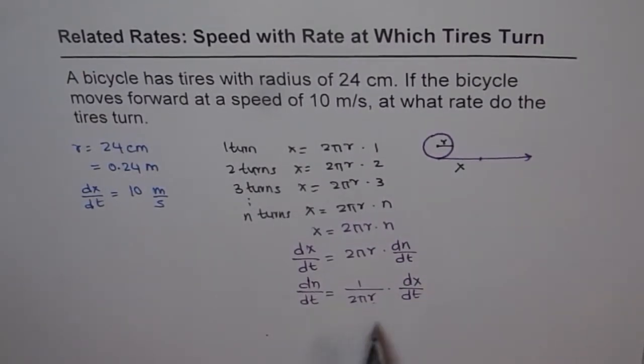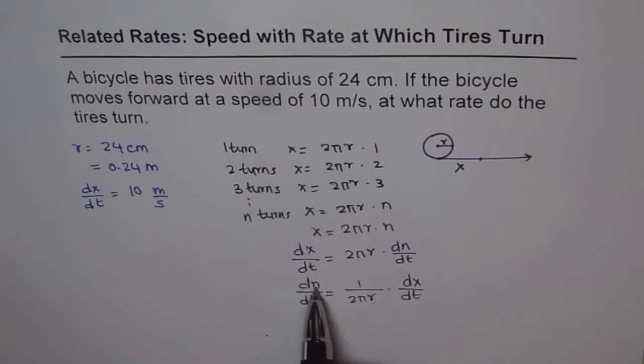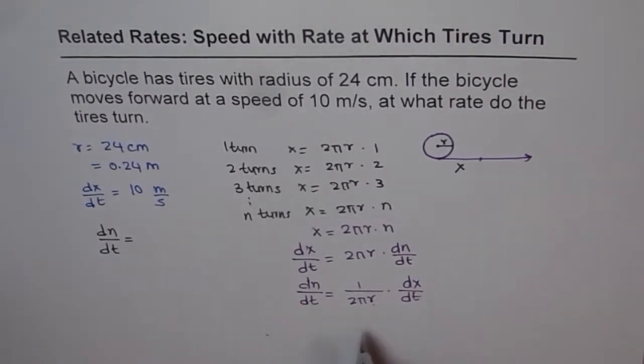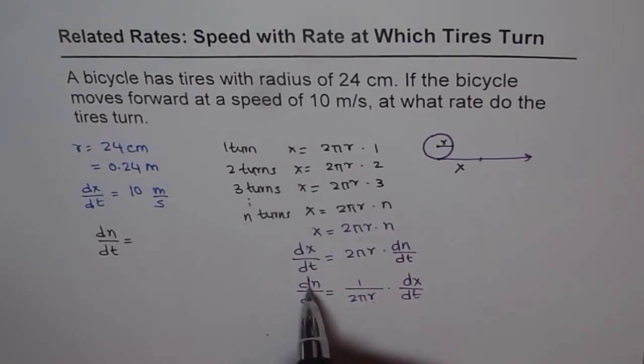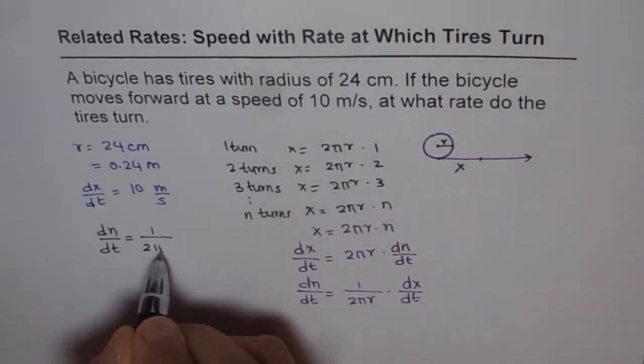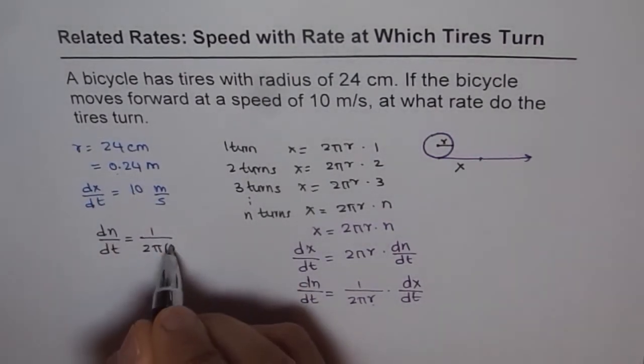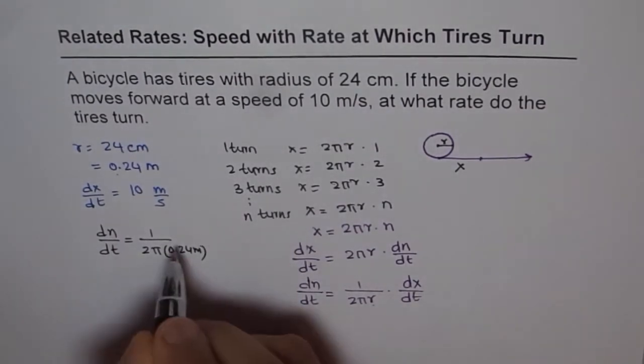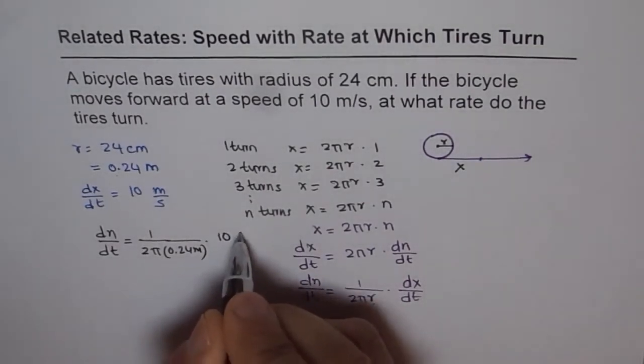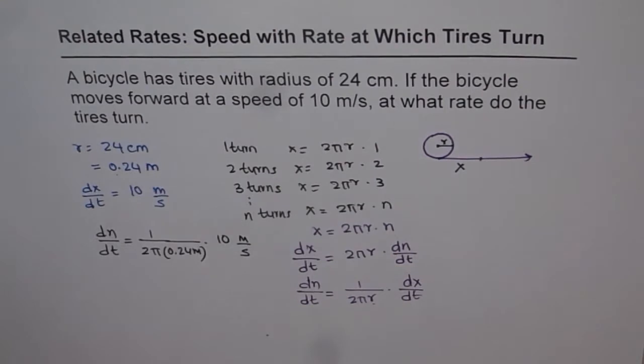You know dx/dt. If you look at this formula, you know r, you know dx/dt, so you can find what is dn/dt. Let's find what is dn/dt. We say d/dt of n, rate of change of number of rotations, equals 1 over 2π and r is 0.24 m, and dx/dt is 10 m per second. That is what we get.